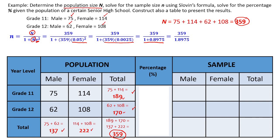359 divided by 1.8975 gives you 189.196. Then round it off to the nearest whole number. The digit after the decimal is 9 — are you going to add 1 to 9, or will 9 remain the same? 9 will remain. So this will be our sample size: 189.